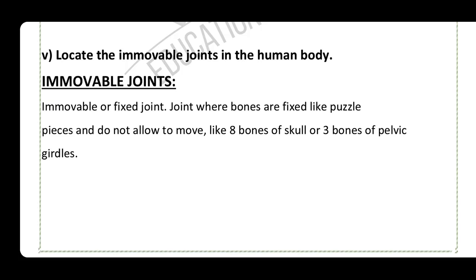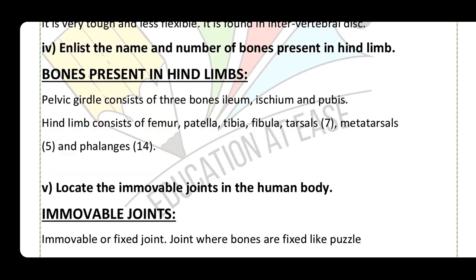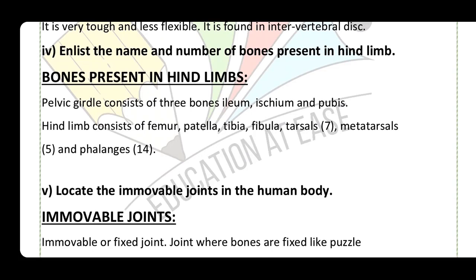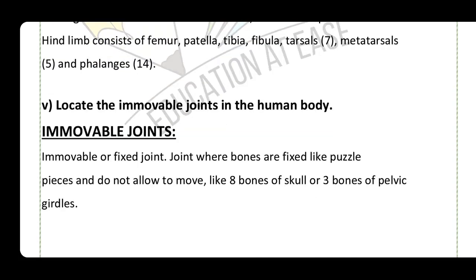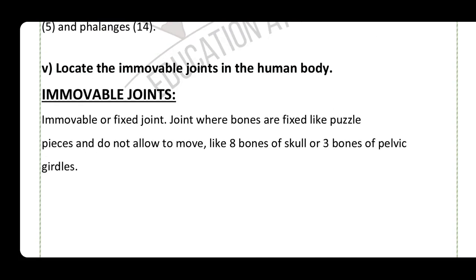The eight bones of the skull are fused together and do not allow movement. The three bones of the pelvic girdle — ileum, ischium, and pubis — are also fixed and form immovable joints.